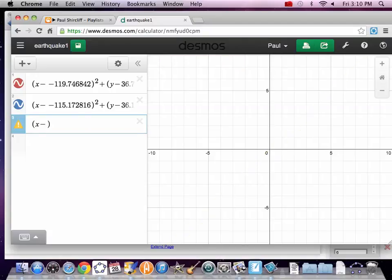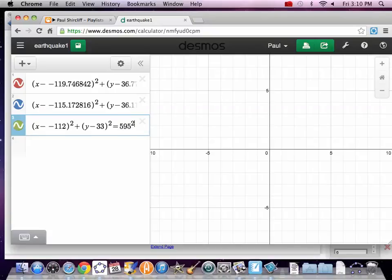X minus a negative 112, and square it, plus y minus 33. Then, again, it's all level precision. It would be nice if we could save the system, but I'm just trying to get this done in an orderly and quick fashion. And this should be a squared, equals 595 squared. And we're rendering.